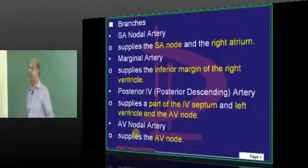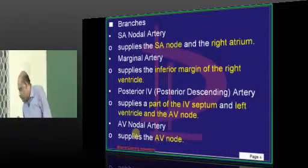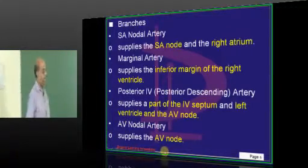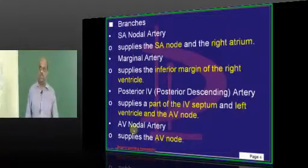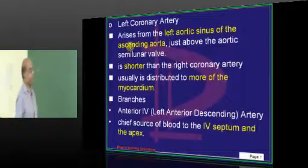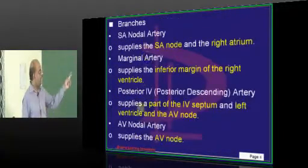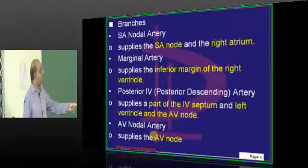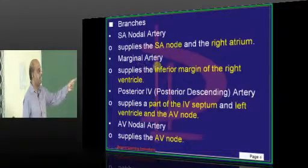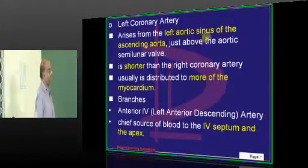Very importantly, the AV nodal artery is also a branch of the right coronary artery — it supplies the AV node. So to summarize: SA nodal, AV nodal, posterior interventricular, and marginal artery are all branches of the right coronary artery.